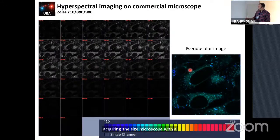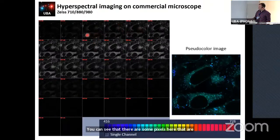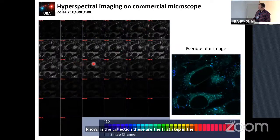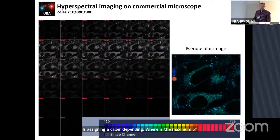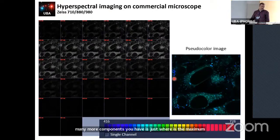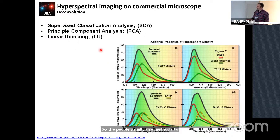This is an example of a hyperspectral image acquired on the ZEISS microscope with 32 channels. These are cells labeled with a dye called Agdan — a dye that changes its spectra depending on the environment. You can see pixels here that are blue, representing earlier spectral channels, and some that are more red. The microscope typically assigns a color based on where the maximum of the spectra is, but you don't get much more information — if you have another component, you will miss it.